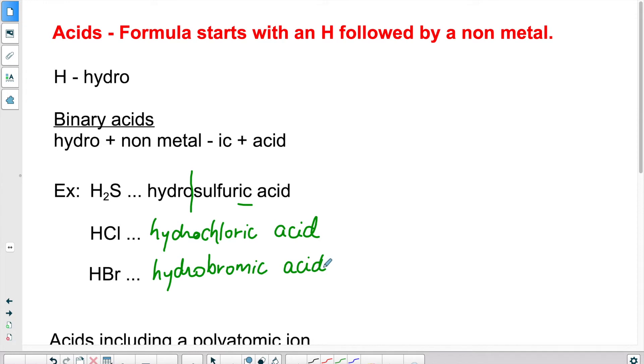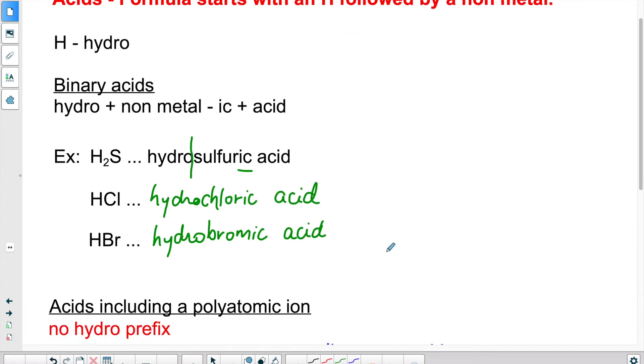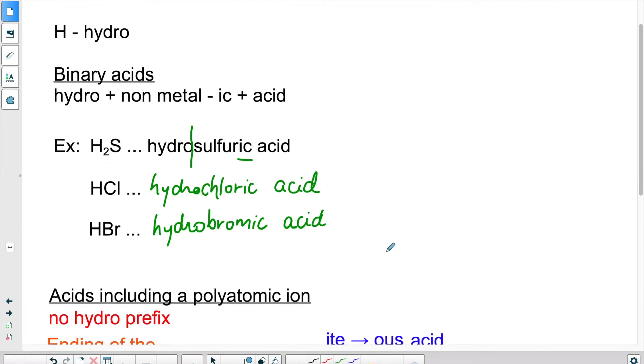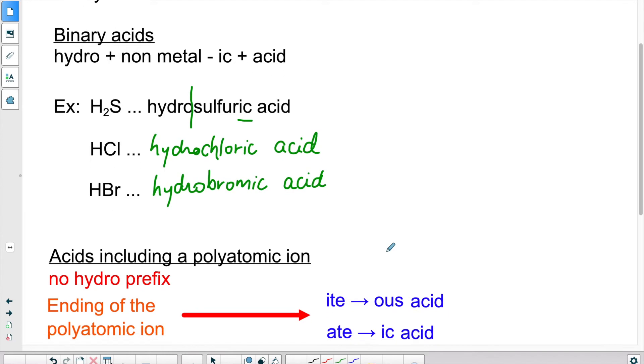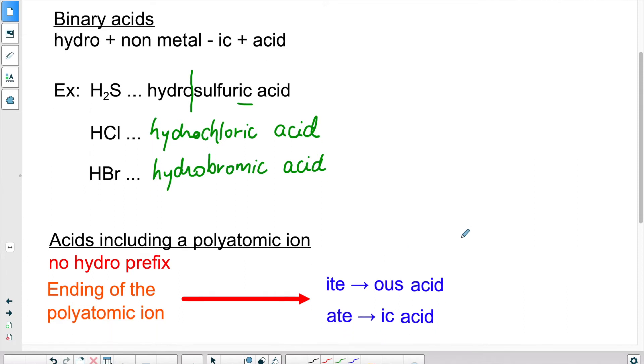Now, when there is a polyatomic ion, it's slightly more complex, obviously. There is no hydro prefix. We don't pay attention to the hydrogen, and that's how we know when we look at a name where there's no hydro part, we know automatically that there is a polyatomic ion in that acid. There's no hydro, we don't pay attention to it, and then depending on the polyatomic ion, how it ends.